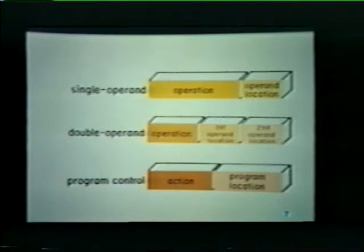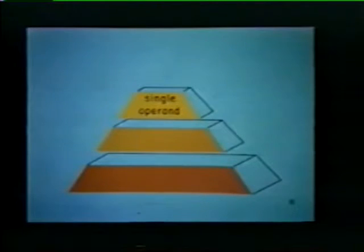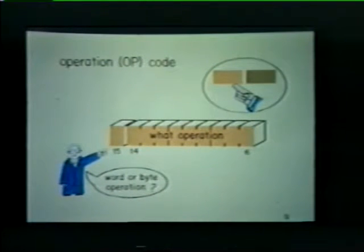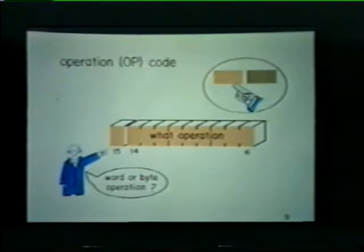The final group consists of program control instructions. This group is significantly different from the previous two groups because we're not dealing with operands at all. The first part of the word specifies some action to be performed, and the second part tells us where that action will take place in the program. Looking more closely at single operand instructions, bits six through fifteen constitute the operation or opcode. Bit 15 indicates whether the selected operation is to be performed on a full data word or on a half word, which we call a byte. The remaining bits specify the particular operation to be performed.